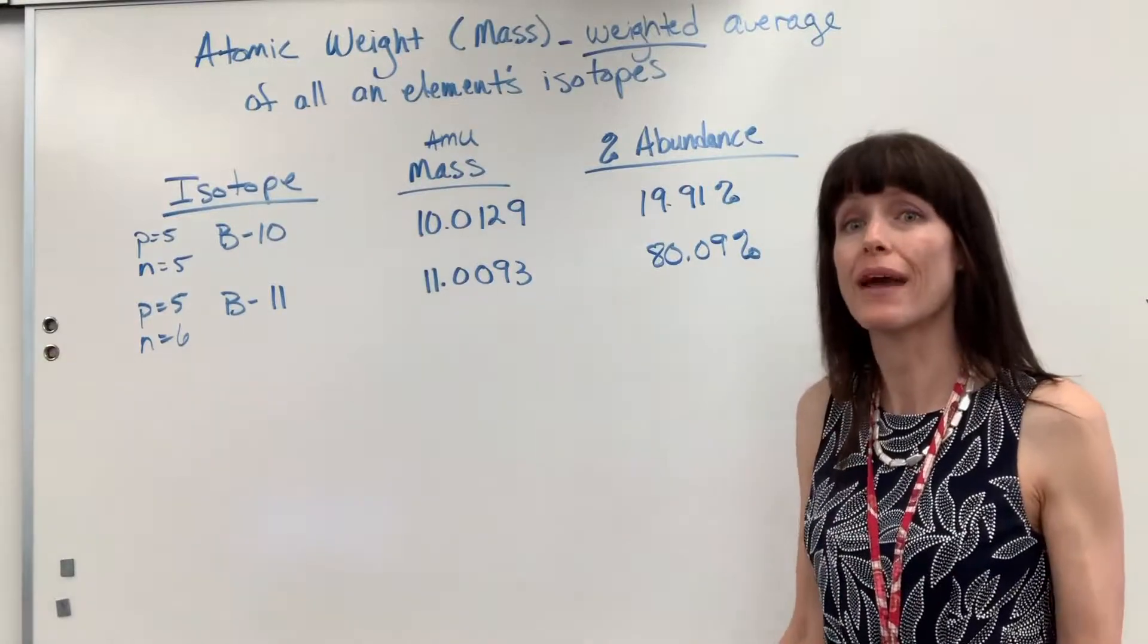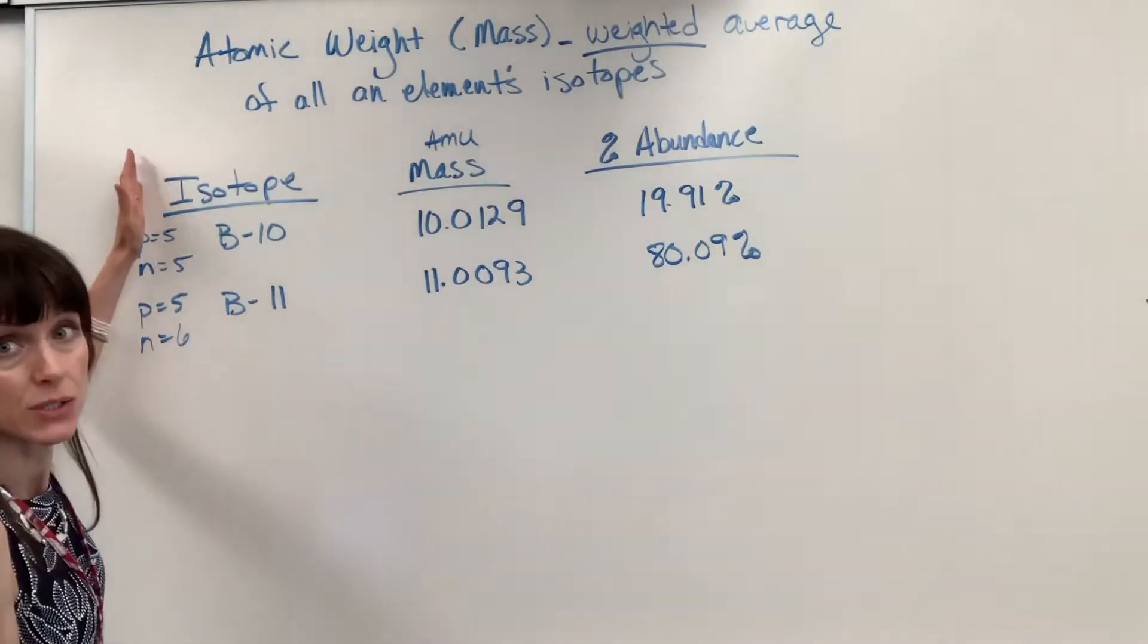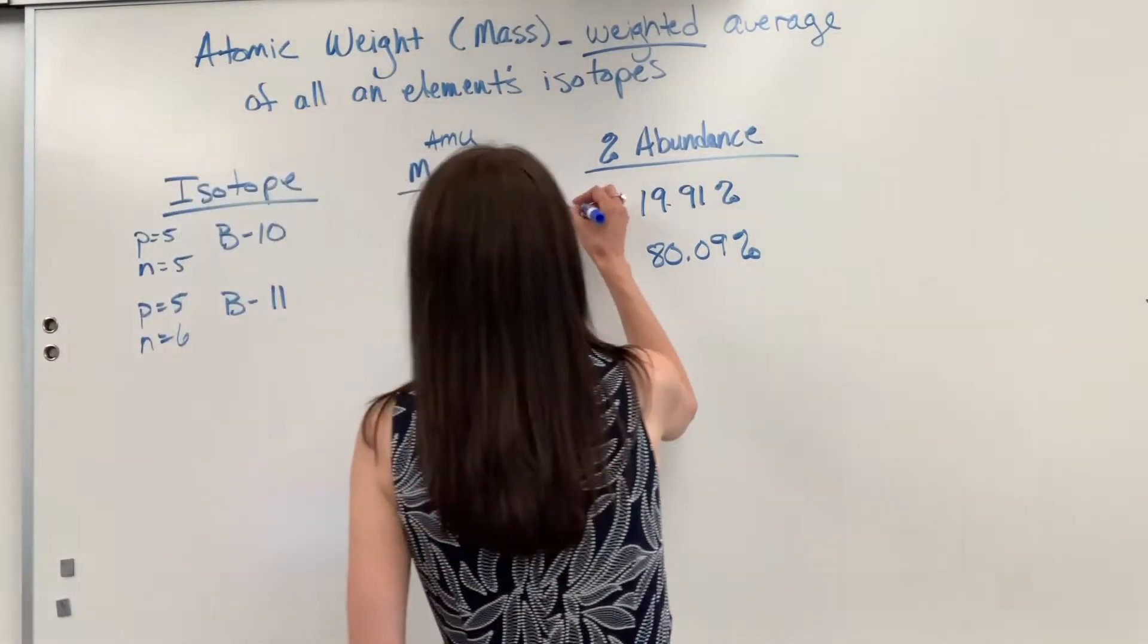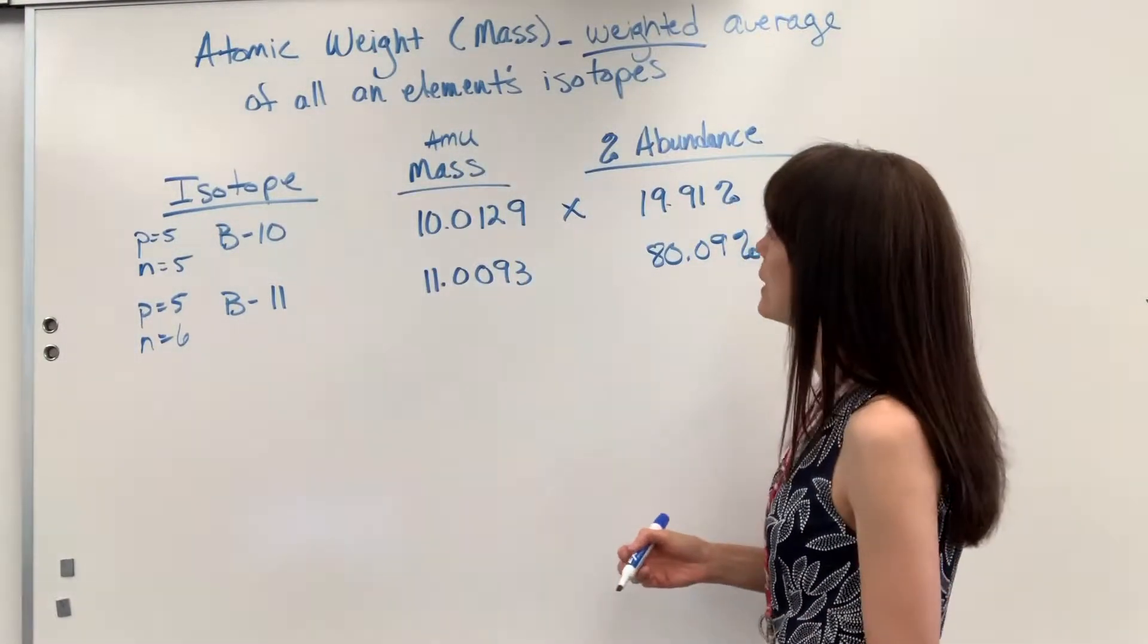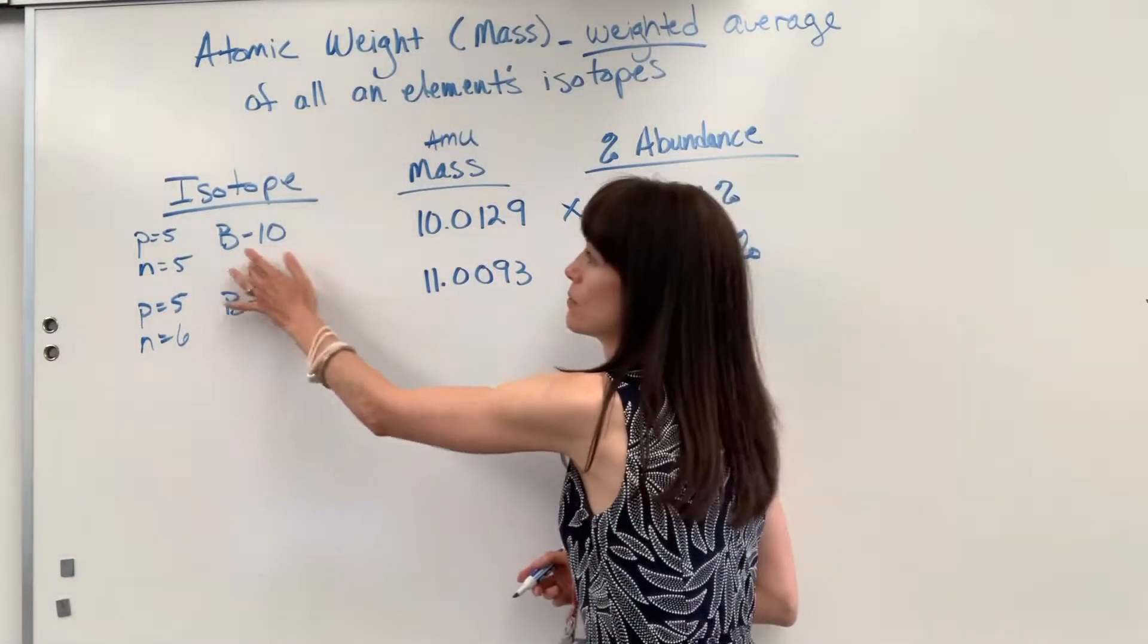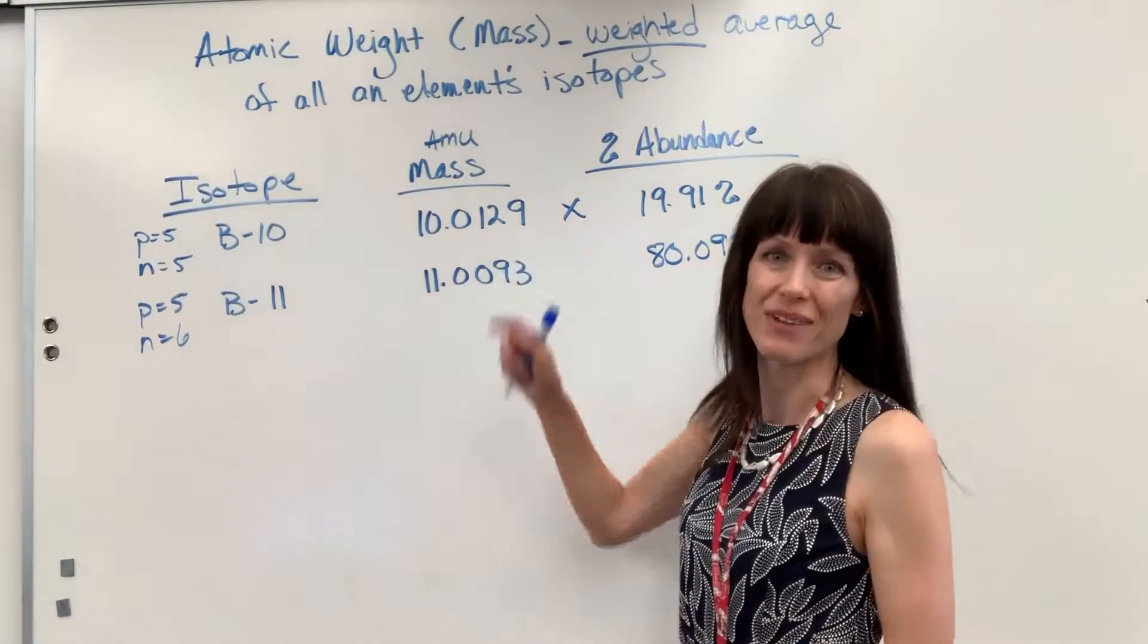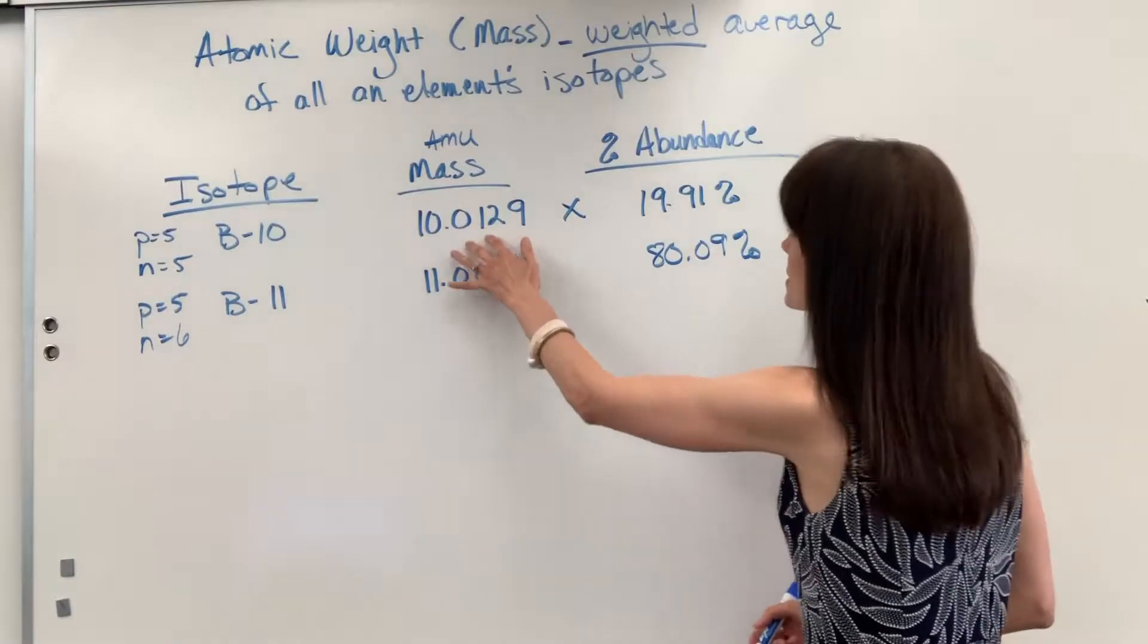And so this is how you calculate it. I recommend you set it up in this table. I always do the isotope first to make sure I'm keeping everything straight: mass unit, and then the percent abundance. What we do is we're going to multiply the mass, and notice this mass is in AMU. It's determined by mass spec, and this itself is also a decimal. Even though we say boron-10, remember that the AMU of one neutron or one proton is not spot on one. So that's why we have this decimal out here, close to one but not spot on.